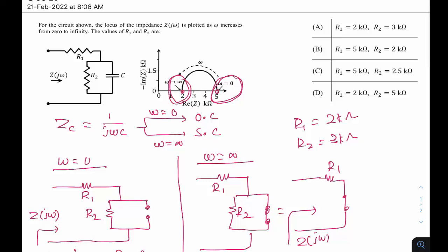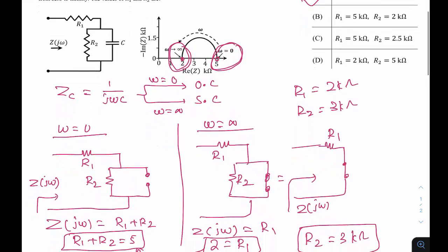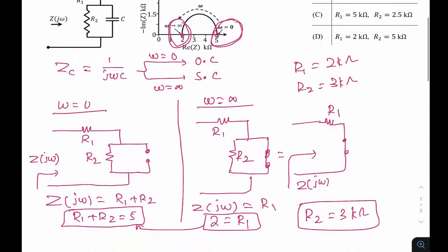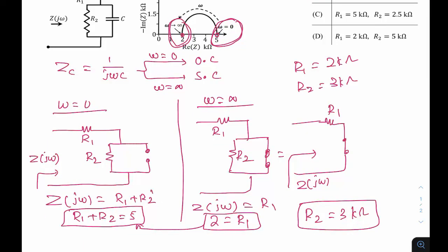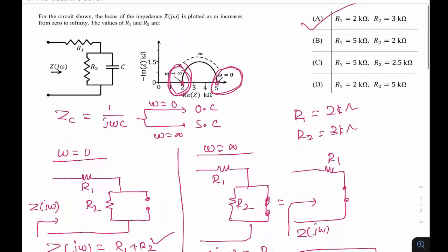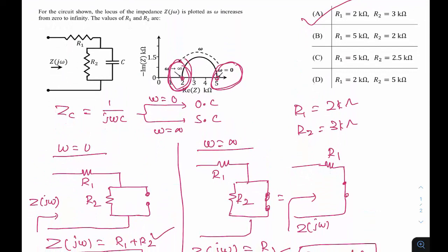By using capacitor properties at two special frequencies zero and infinity, we drew the circuits: at ω = 0 the impedance is R1 + R2 = 5 (from the plot); at ω = ∞ the impedance is R1 = 2 (from the plot). This gives R1 = 2 kΩ and R2 = 3 kΩ, option a is the right answer. This is a straightforward question taking about one minute.